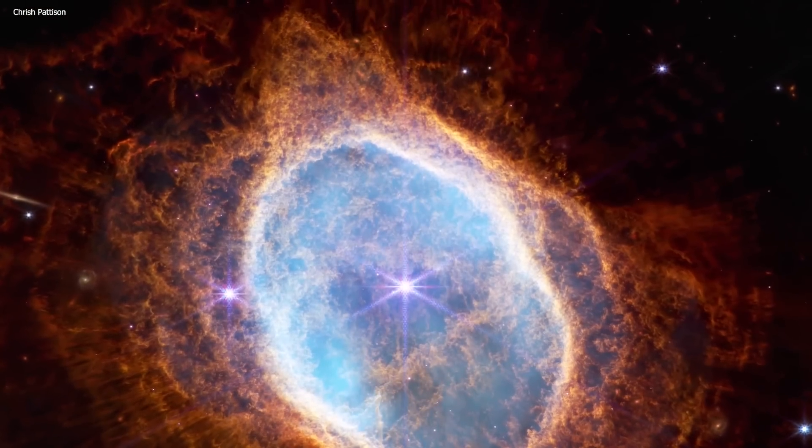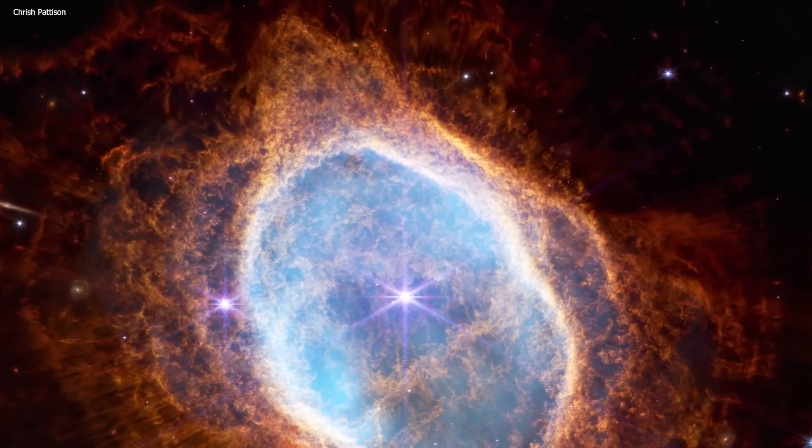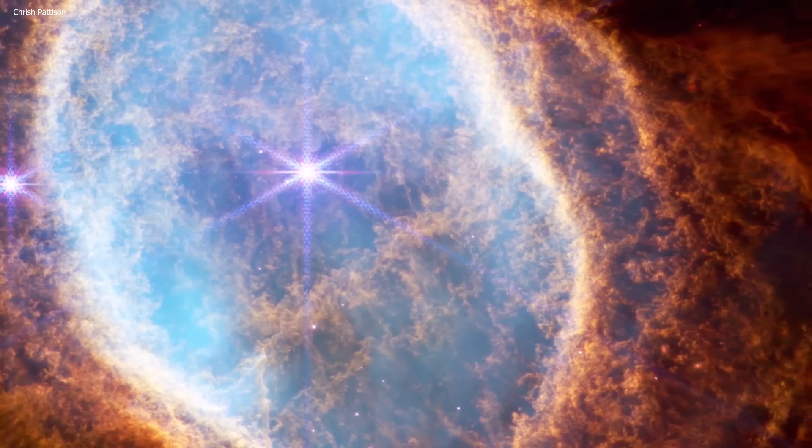In the center of the Southern Ring, there's a white dwarf, a star that has shed most of its material and collapsed under its own gravity, emitting a radiant white light.